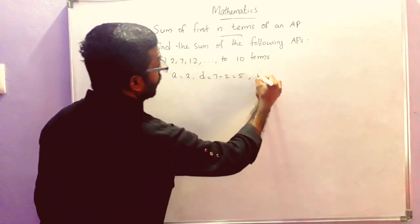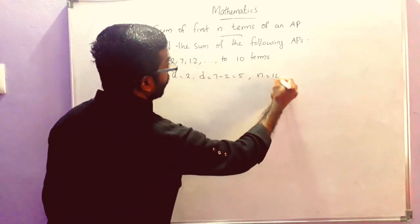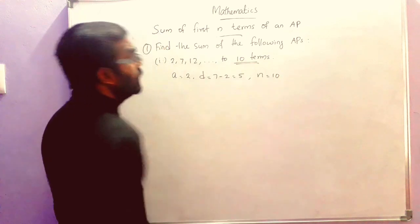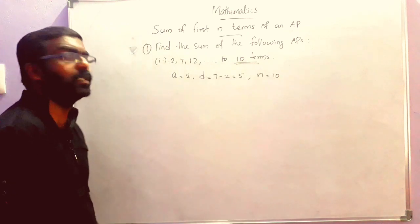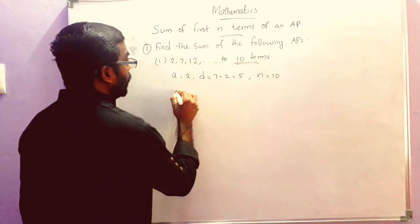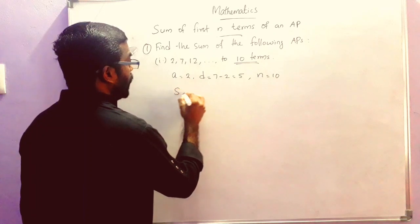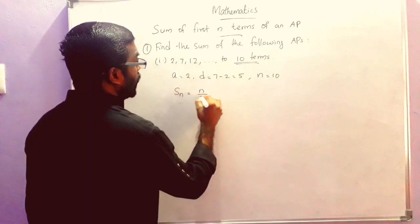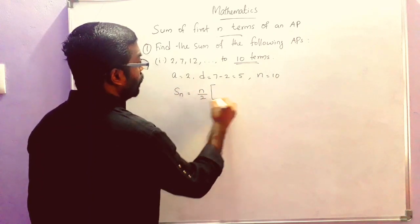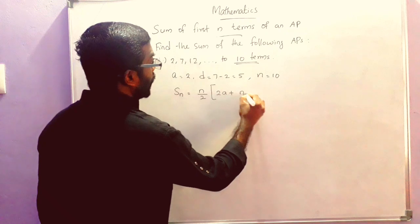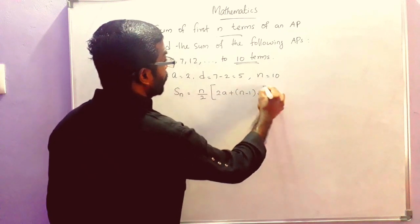N is equal to 10. We have to find the sum of the first 10 terms, so N is equal to 10. Now we can write the formula: S_N is equal to N by 2 into 2A plus N minus 1 into D.